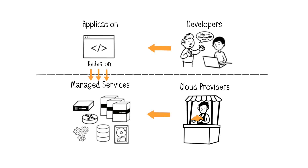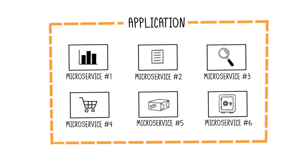A major difference in a cloud-native application lies in its distributed architecture. A cloud-native application relies on a decomposed architecture with multiple small services. This is known as a microservices architecture, where each service specializes in a single task, collectively forming the application.